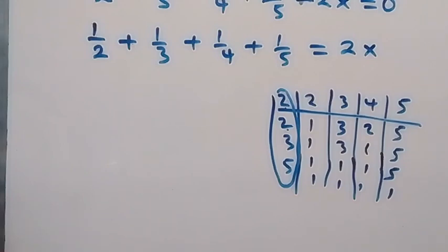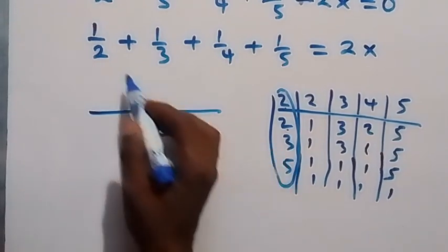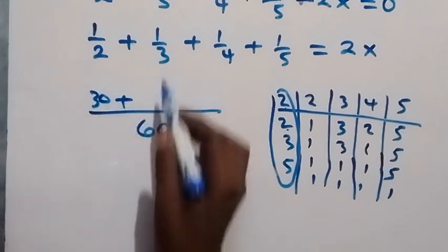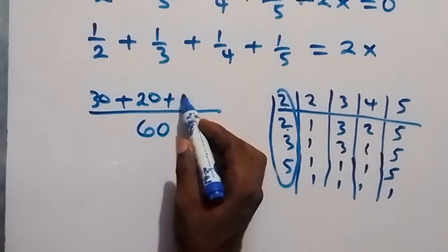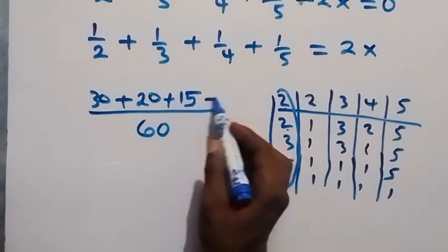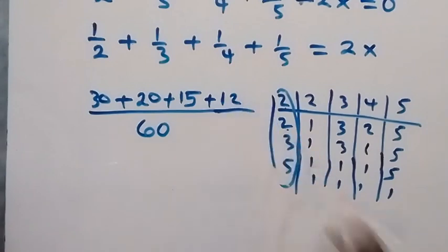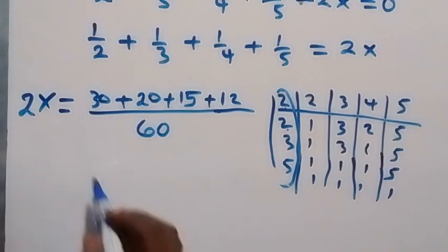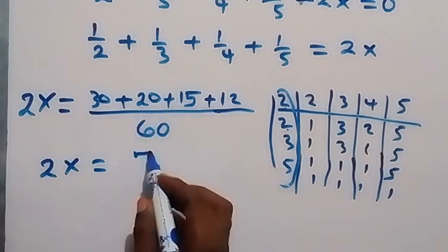Using LCM = 60: 60 ÷ 2 = 30, so we get 30; 60 ÷ 3 = 20, so we get 20; 60 ÷ 4 = 15, so we get 15; 60 ÷ 5 = 12, so we get 12. Adding these together gives us 77 over 60, which equals 2x.